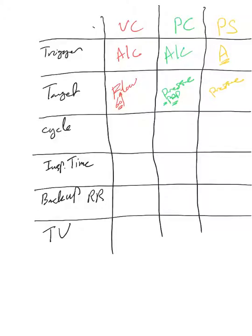For cycle, here is tidal volume. Once the tidal volume is delivered, the breath will terminate. Cycle here is time - we provide how long the inspiration will go. And cycle here is flow - we provide the threshold for the flow, the sensitivity of the flow, at which the breath has to be terminated.